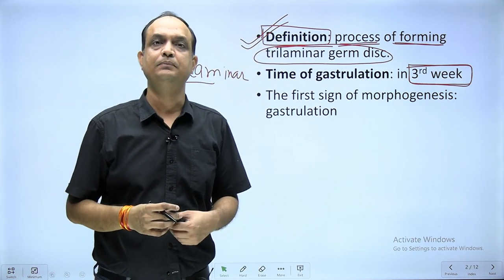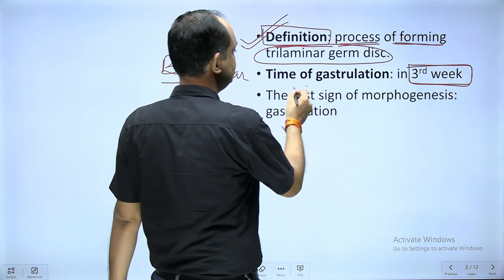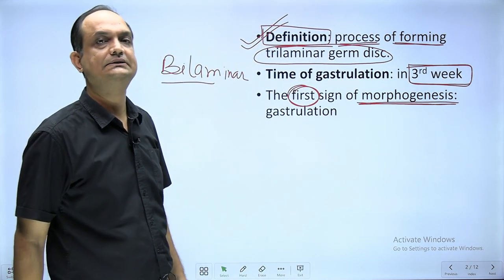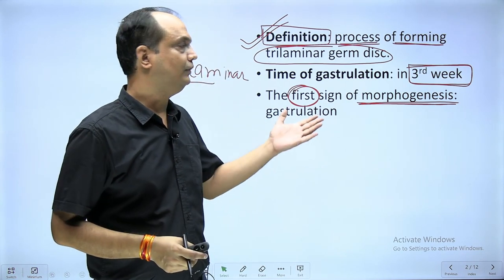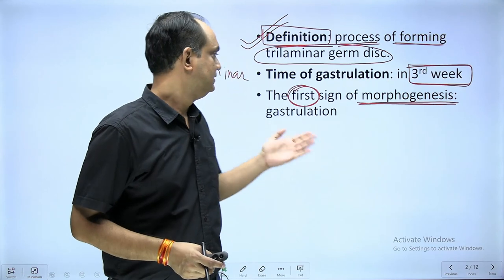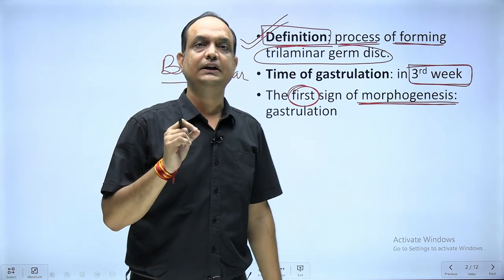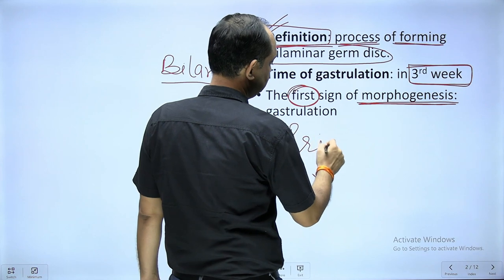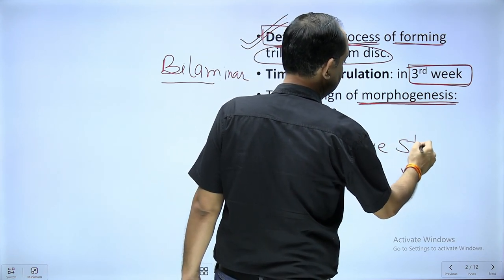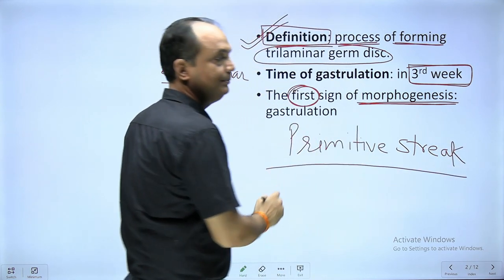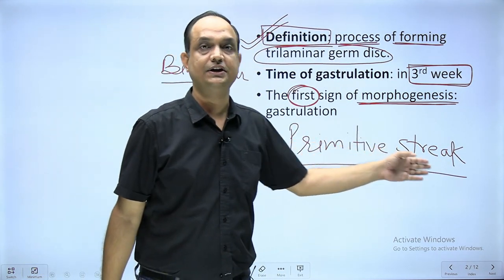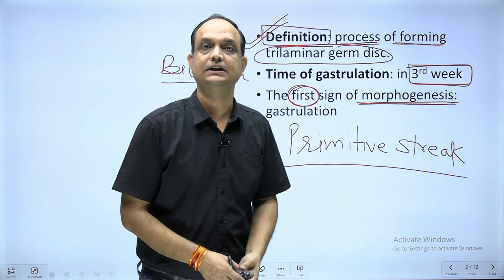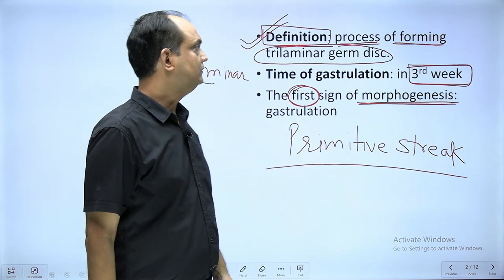There is a very important question: what is the first sign of morphogenesis? Morphogenesis means formation of body form. Body form formation starts with gastrulation. And when you see gastrulation, there is a very important structure which appears known as primitive streak. If the question is which structure appears first, the answer is primitive streak, which is a sign of morphogenesis. And if the question is which is the first sign of morphogenesis, that is gastrulation.